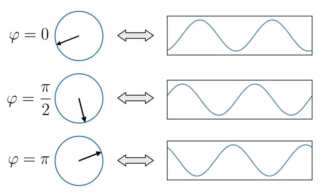Then we do the same thing for all frequencies from minus infinity to plus infinity, and if we integrate them, we obtain our original signal. And thus, my fellow viewers, is what the Fourier transform is trying to tell us in its mathematical form.